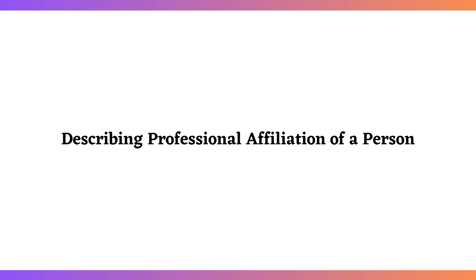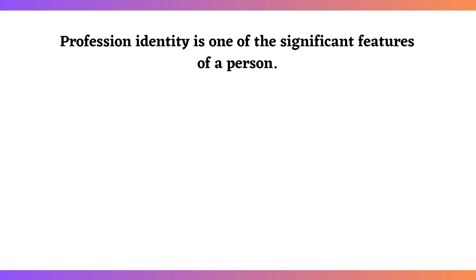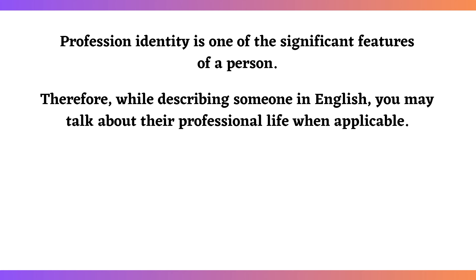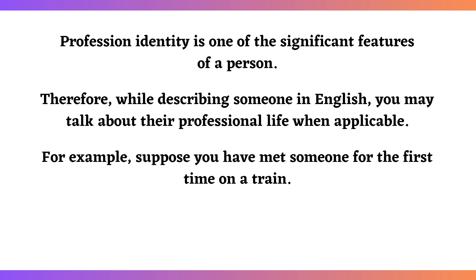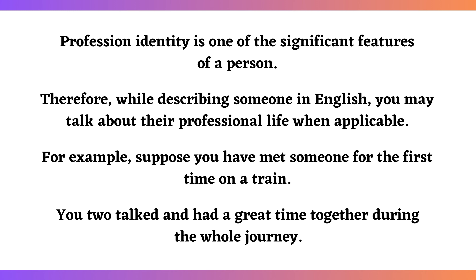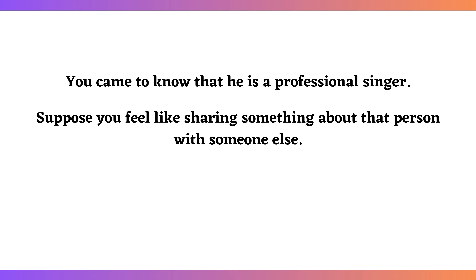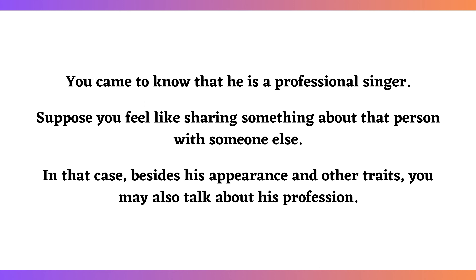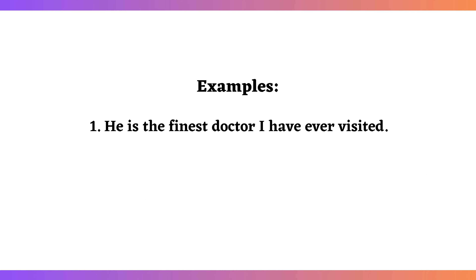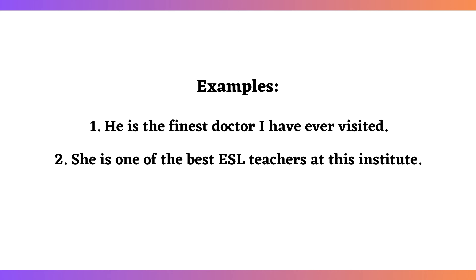Describing professional affiliation of a person: profession identity is one of the significant features of a person. Therefore, while describing someone in English, you may talk about their professional life when applicable. For example, suppose you met someone for the first time on a train, had a great time, and found out he is a professional singer — you may also talk about his profession when sharing about that person. Examples: He is the finest doctor I have ever visited. She is one of the best ESL teachers at this institute. He is a chef at a five-star hotel.